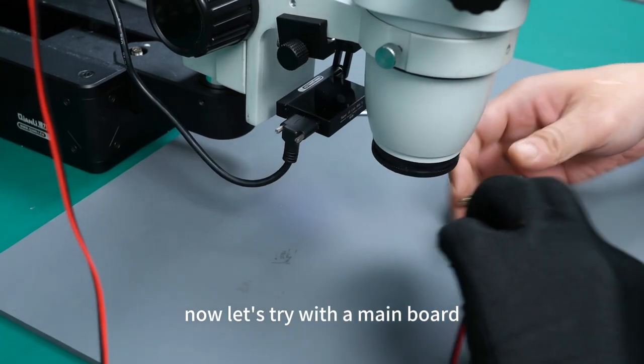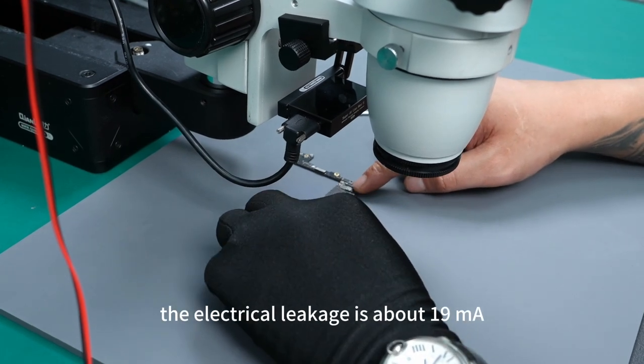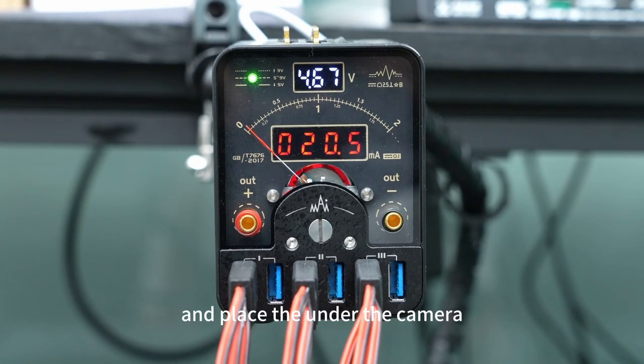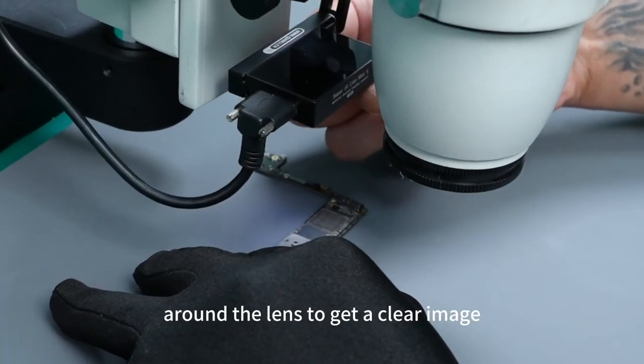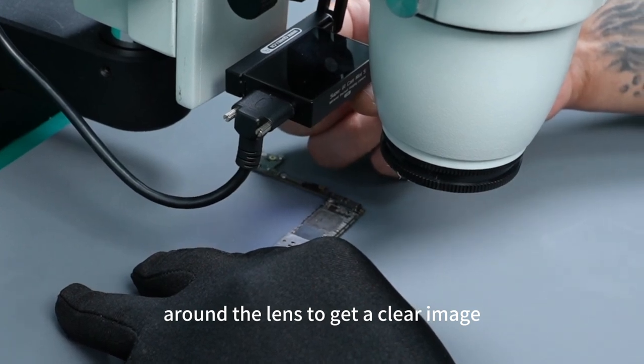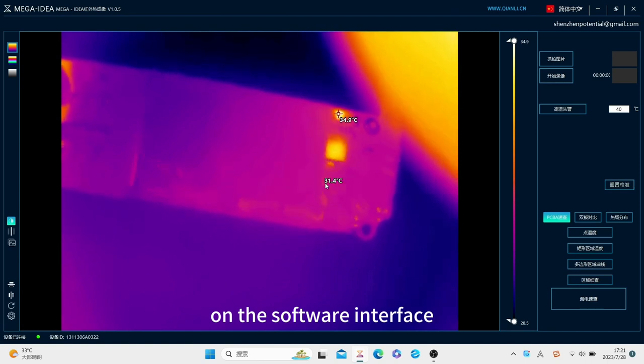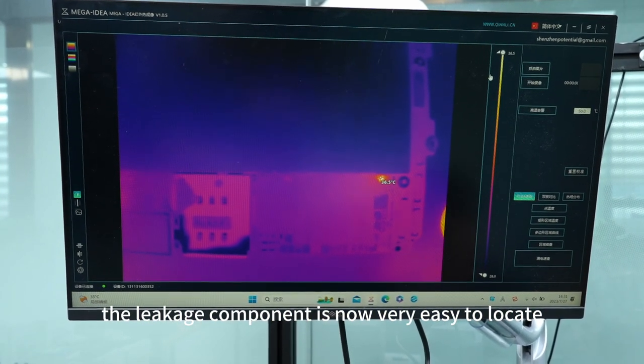Now let's try with a main board. We have already known that the electrical leakage is about 19mA. Power on the board and place it under the camera. Now we can adjust the focusing ring around the lens to get a clear image. The detection result shows very clearly on the software interface. The leakage component is now very easy to locate.